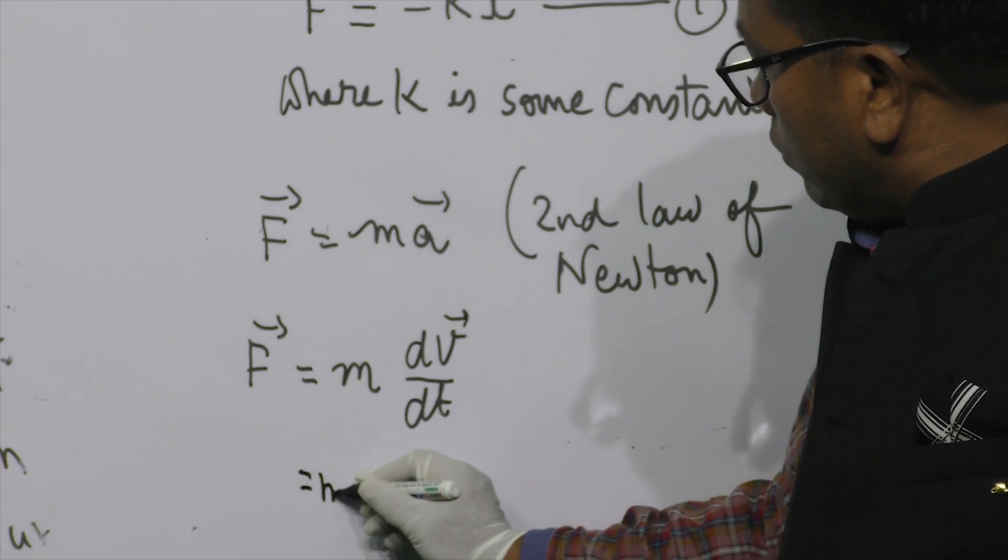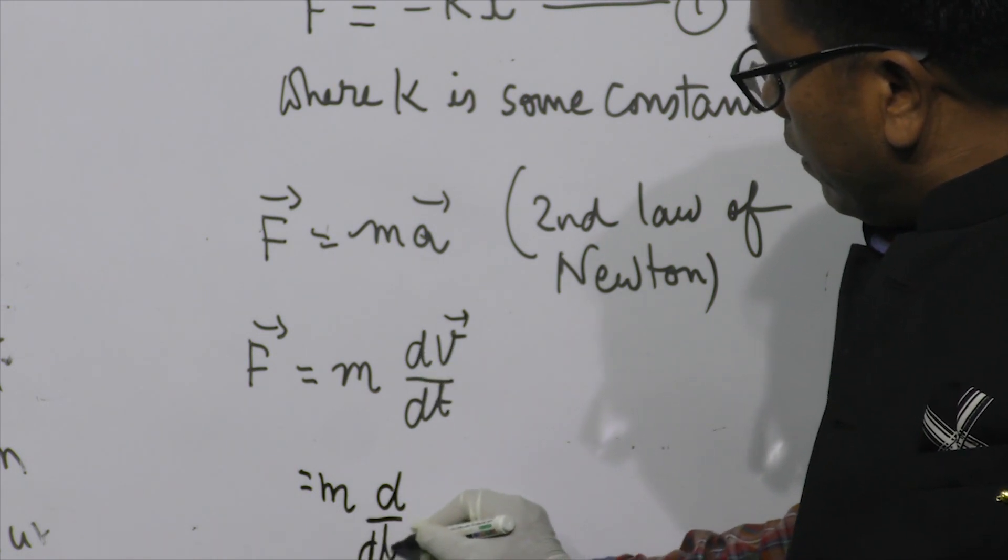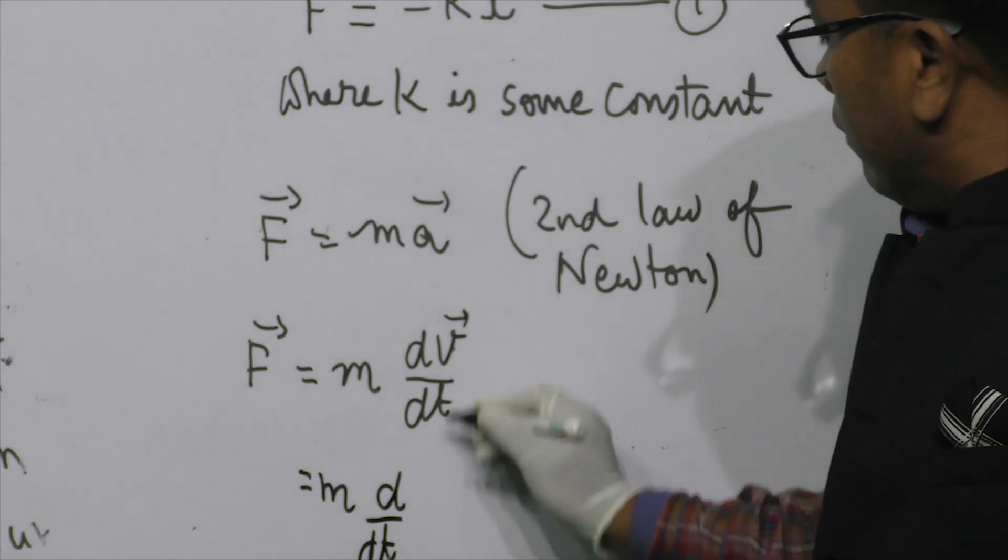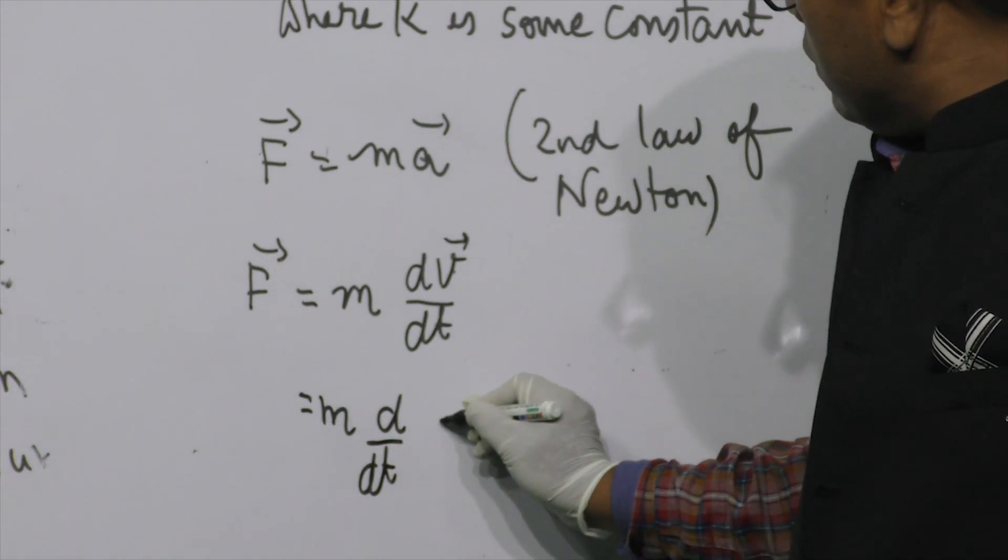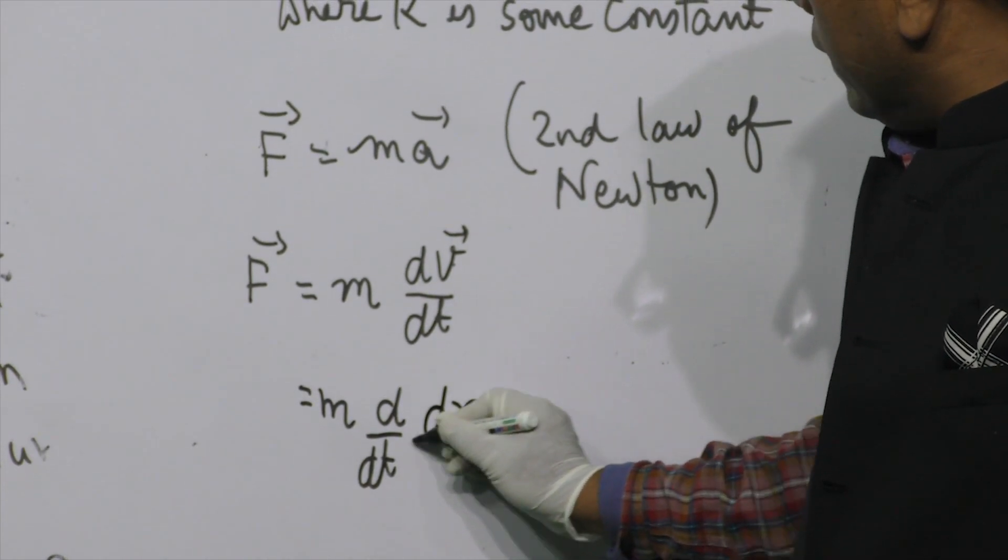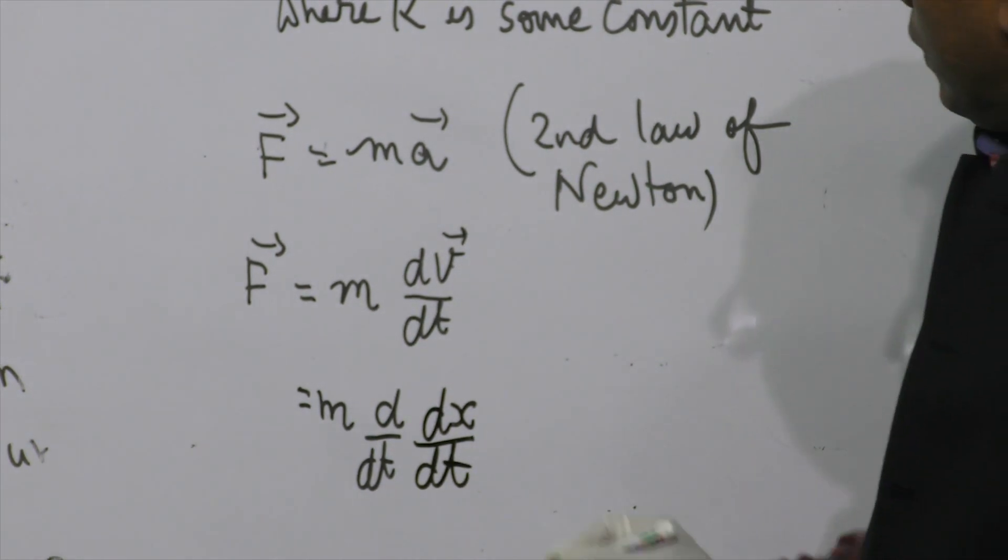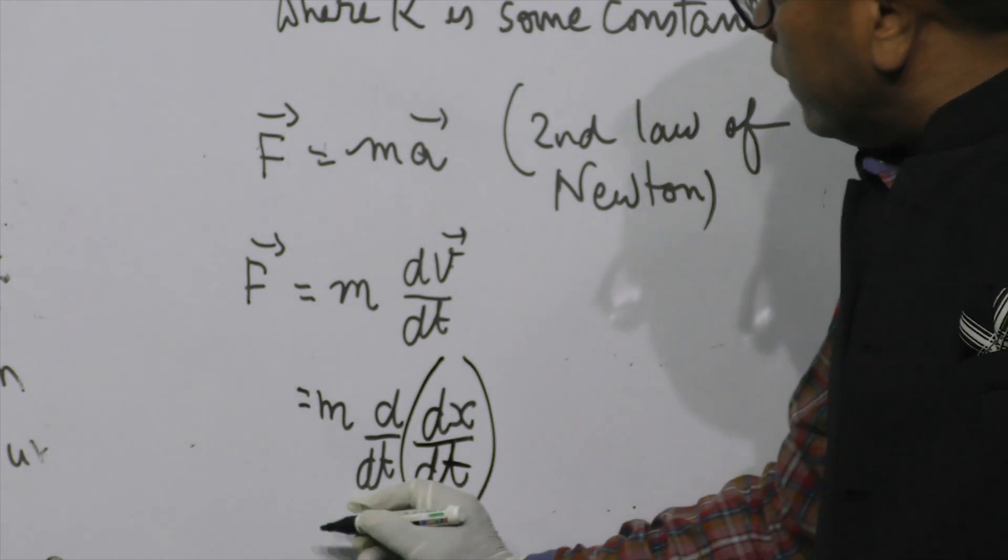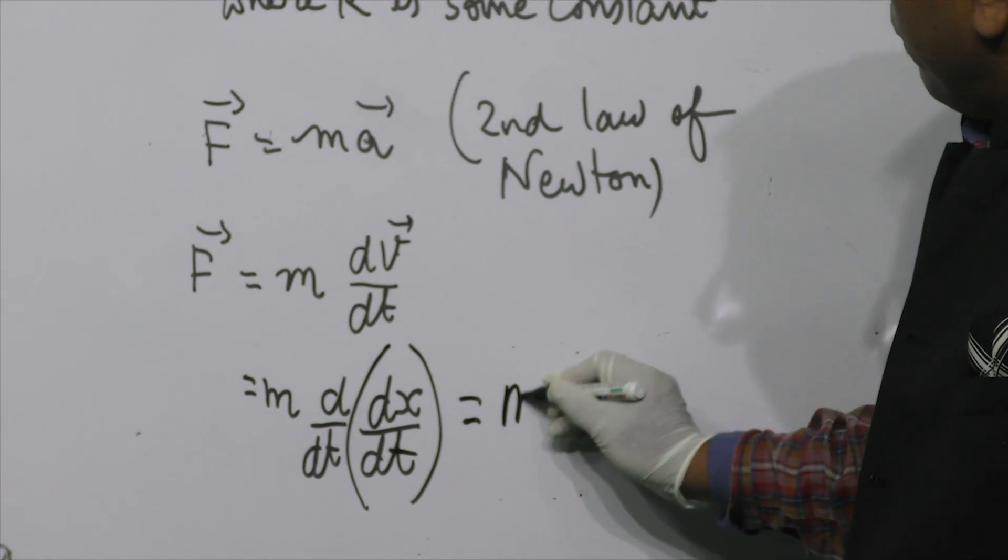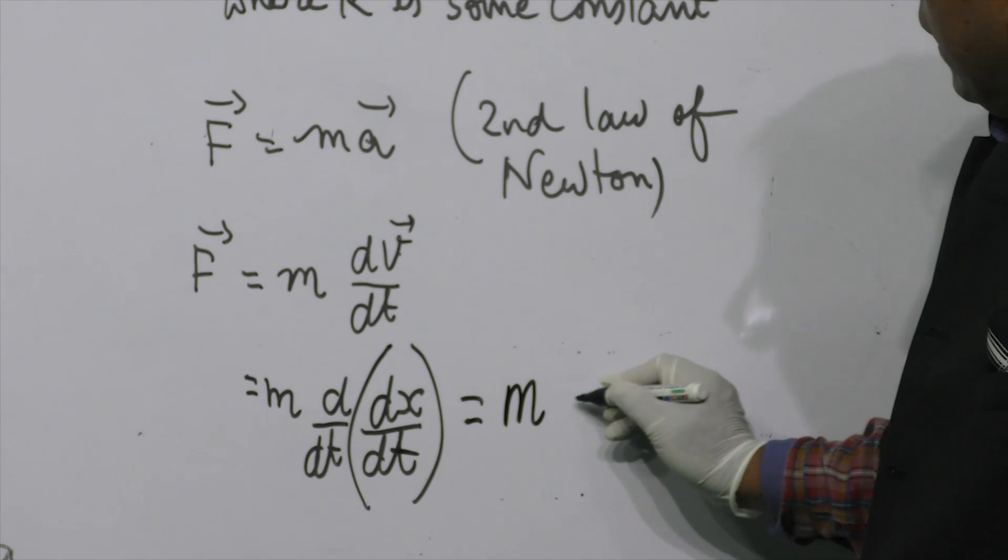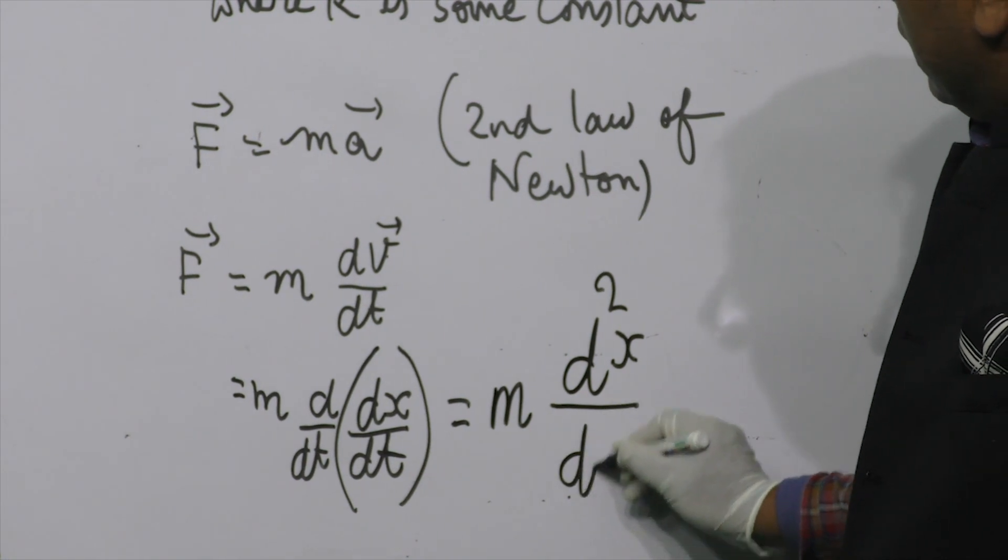Again, I can also write this as put d by dt as it is. And instead of V, I can write, V is the rate of change of position or displacement. So I can write this as dx by dt. So ultimately, this will be equal to M, then this is d square x by dt square.